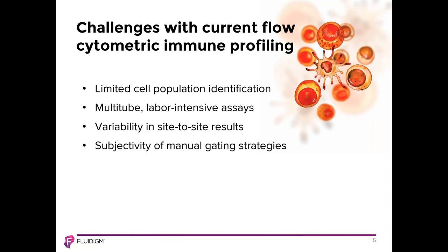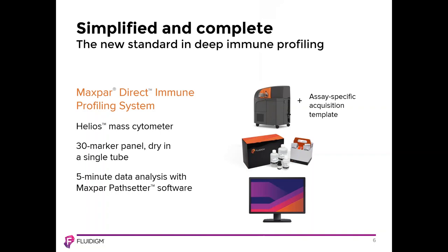Fluidigm has launched an innovative approach to high-dimensional immune profiling with the Maxpar Direct Immune Profiling System, which addresses many of these challenges. The system consists of an assay kit with a dry 30-marker panel in a single tube plus the reagents needed to process either PBMC or whole blood samples, a custom template to collect samples on the Helios mass cytometer, and an automated data analysis software solution. Data analysis of FCS files can be completed in as little as five minutes with Maxpar Pathsetter software.